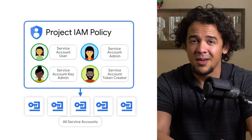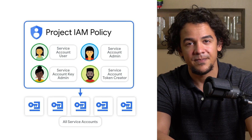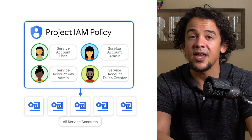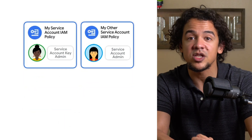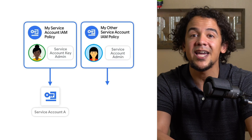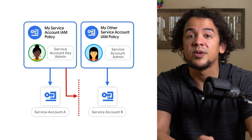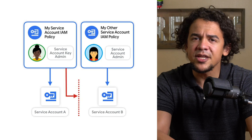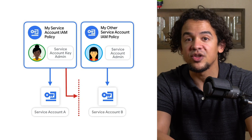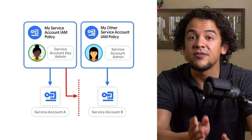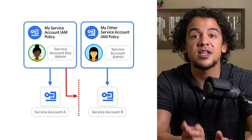But watch out — by granting them on a project's policy, it will grant those permissions on every service account that exists on that project. This likely goes against the principle of least privilege and is generally not a great idea. Instead, you can avoid over-delegating access to service accounts by editing individual service account IAM policies. Service accounts aren't just accounts — they're also considered resources with an attached IAM policy. By binding users to these roles on individual service accounts, you decrease the likelihood of accidental changes and substantially decrease the blast radius if a user account is ever compromised. Do your best to grant users access only to the service accounts that they actually need.